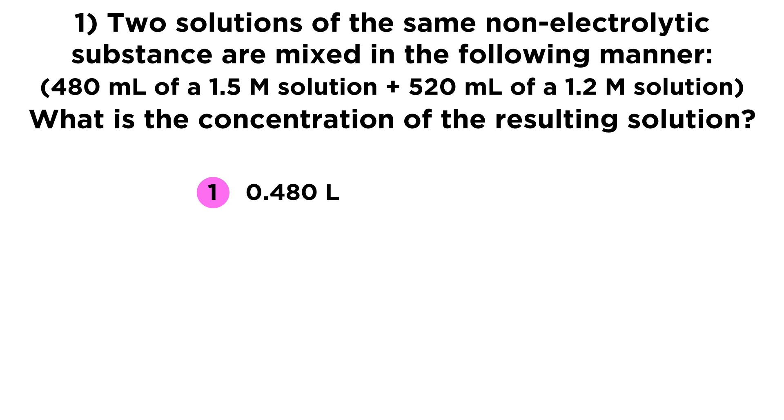We know that we have 480 milliliters, so let's put that as 0.48 liters. And then let's multiply that by 1.5 moles per liter because it's a 1.5 molar solution. So by doing this, we are finding out that there are 0.72 moles of this solute in that first solution.